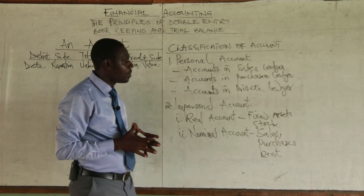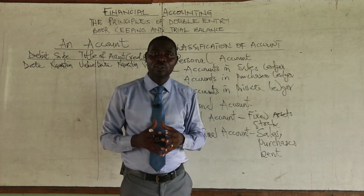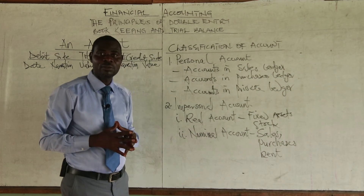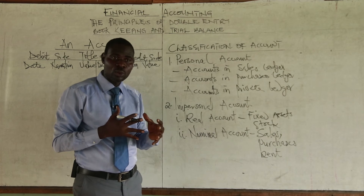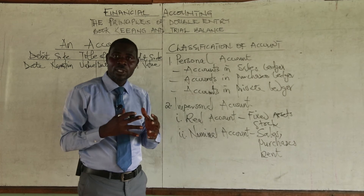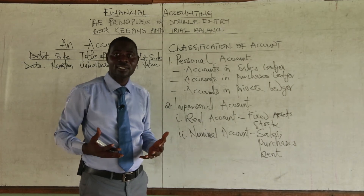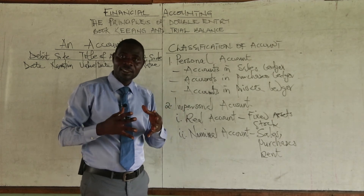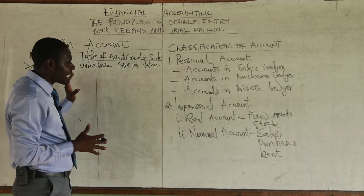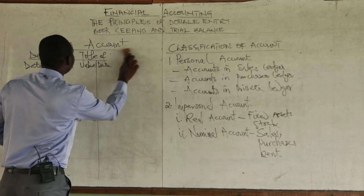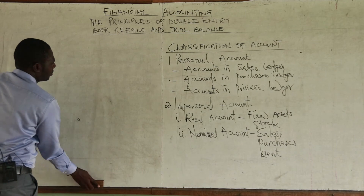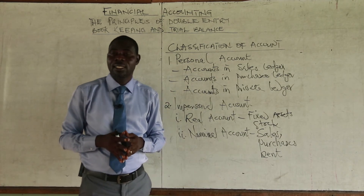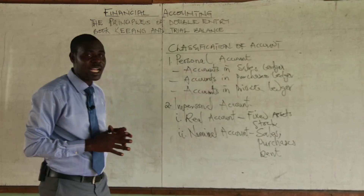Now let's look at how the double entry principle works in relation to the classes of accounts, so that it will be easier for us to identify and draw up accounts when we come across transactions. We should be able to easily identify the two accounts involved when a transaction is given to us. So let's look at how recording is done for the various classes of accounts.